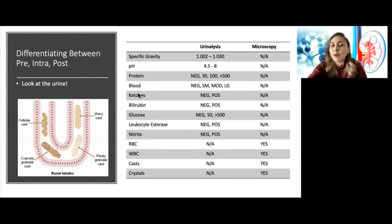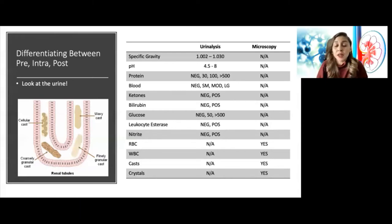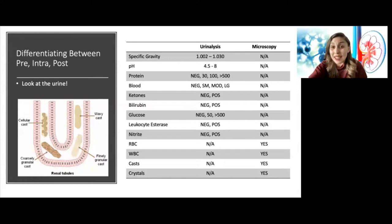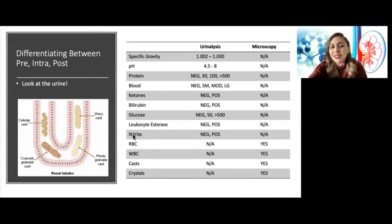If urine protein is positive on UA, this is albumin. For blood, what turns the blood positive on UA is either hemoglobin or myoglobin. A patient who has rhabdomyolysis releasing myoglobin into circulation — that myoglobin in the urine will turn blood positive on UA. Ketones are a marker that the patient has shifted to fatty acid metabolism. Bilirubin is mostly seen with liver disease, and glucose primarily in patients who have diabetes or hyperglycemia, sometimes in the setting of steroids.